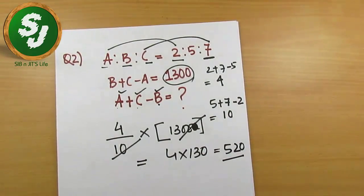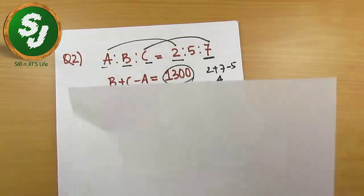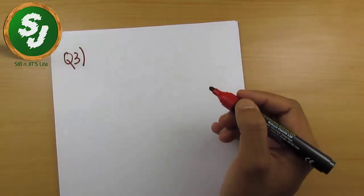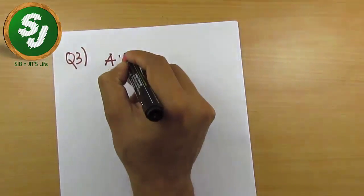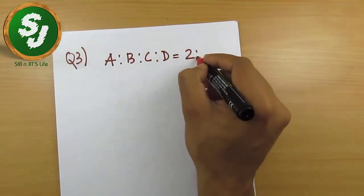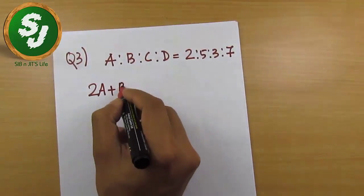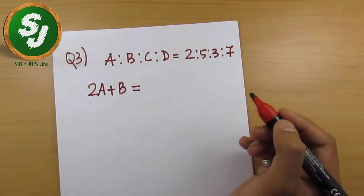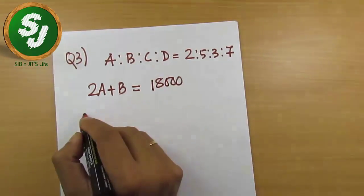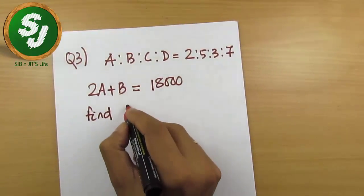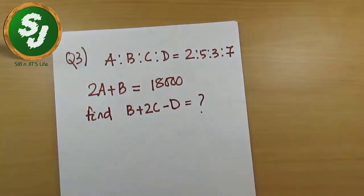Let me explain one more question — a bit more complicated, but I'm sure you can solve it too. Question number three: a is to b is to c is to d equals 2 is to 5 is to 3 is to 7. The given information is 2a plus b equals 18,000. Find the value of b plus 2c minus d.